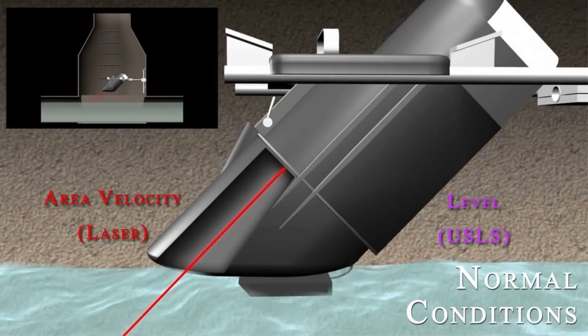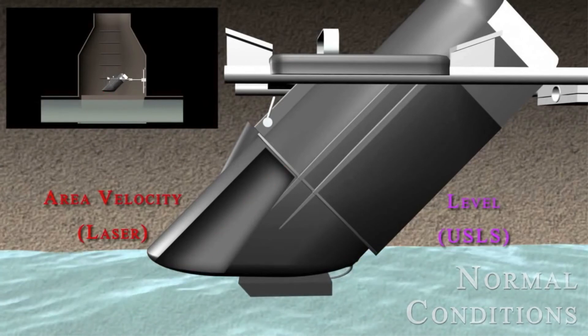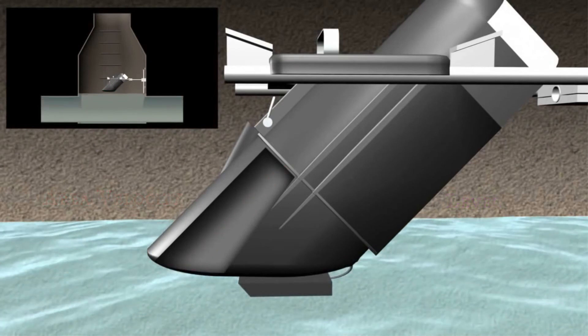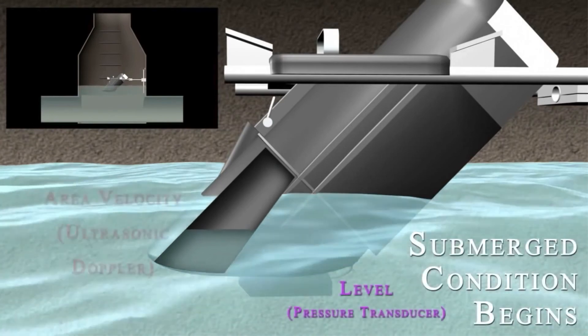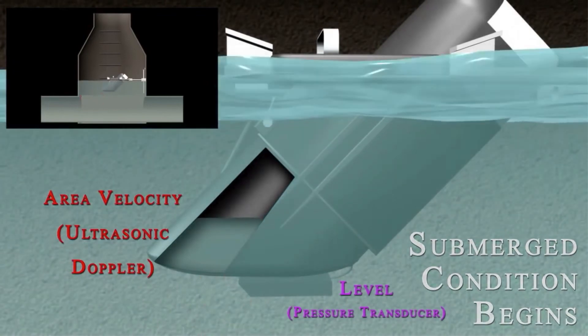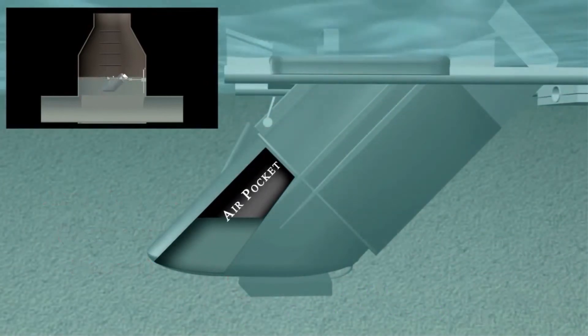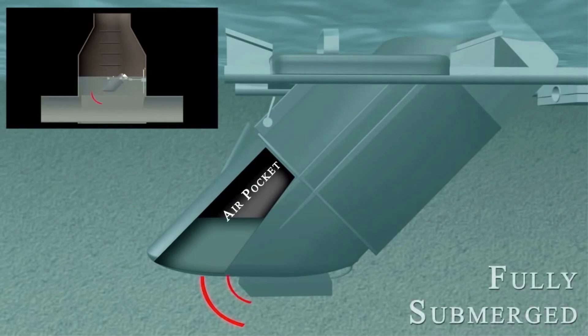During submerged conditions, flow measurement continues without interruption, with optional continuous wave Doppler ultrasonic area velocity technology. The sensor provides ultrasonic Doppler velocity measurement and differential pressure level measurement. The ultrasonic Doppler technology provides more accurate flow measurement during submerged conditions.